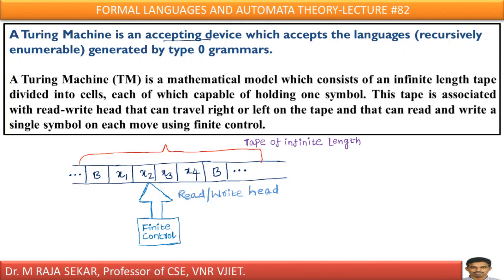A Turing machine is an accepting device which accepts language. Which types of languages it can accept? Recursively enumerable language. That language is generated by type 0 grammar. This I already explained in lecture number 13, just try to refer that lecture once.